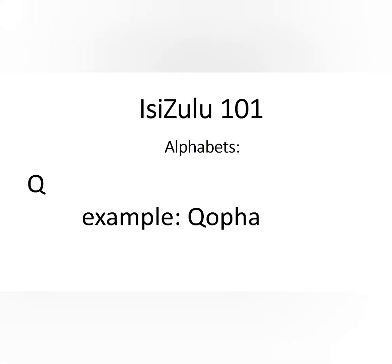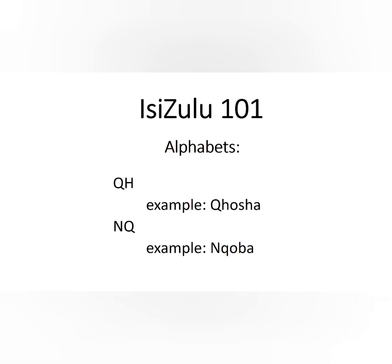We are going to start today's lesson with a click. The letter is Q. Example: 'uqa' — so the sound is Q. There are a bunch of things we can do with Q, as you have seen previously when we were doing N and G. 'Uqa' means 'record.' Let's see what happens when we add an H.